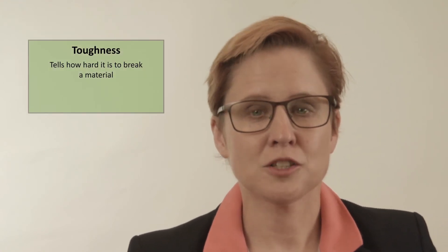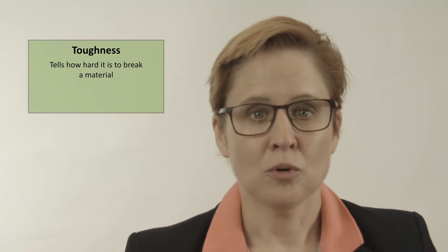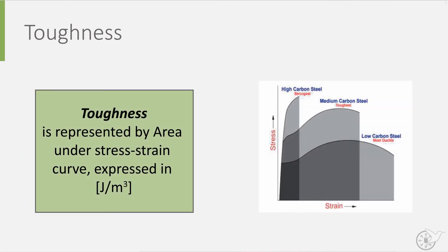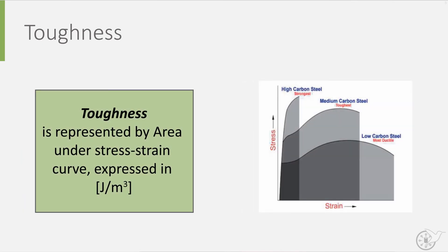Another important material property is toughness. Basically, it tells you how hard it is to break a material. So, we can look at toughness as the resistance against breaking. This is often represented by the area under the stress-strain curve, and has the unit of joule per cubic meter, or the energy per unit volume.